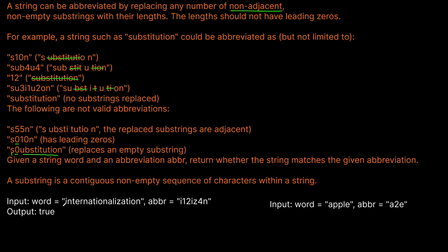If we have the word internationalization and the abbreviation i12iz4n, is this valid? We have the i here, then we need to go 12 characters forward. We count 12 characters, then we have iz — those match. Then we move 4 characters forward and we have our n. We're at the end of both strings, having processed the entirety of our word and the abbreviation. Therefore, we return true.